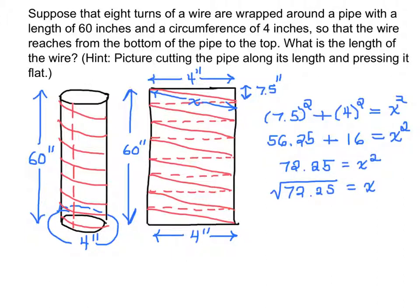So let me find the square root of that. 72, I have my calculator here, 0.25. And I take its square root. And it is 8.5. So x is equal to 8.5. That's the length of one turn of the wire around the pipe.